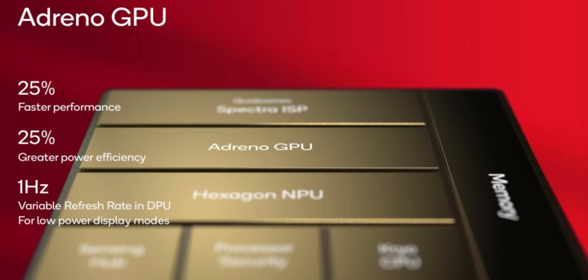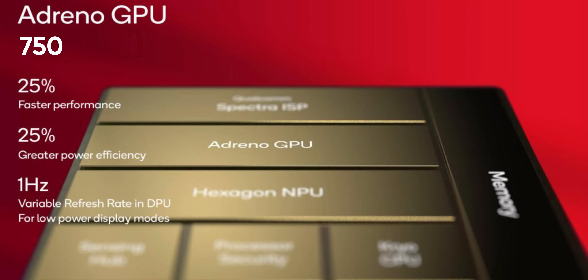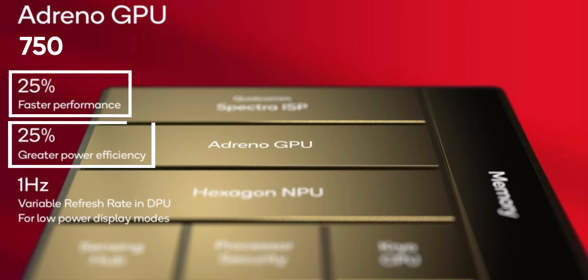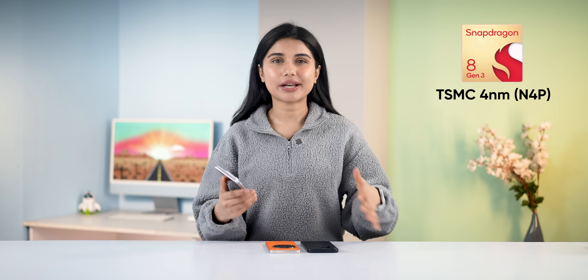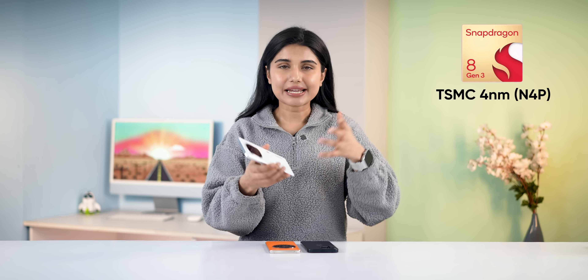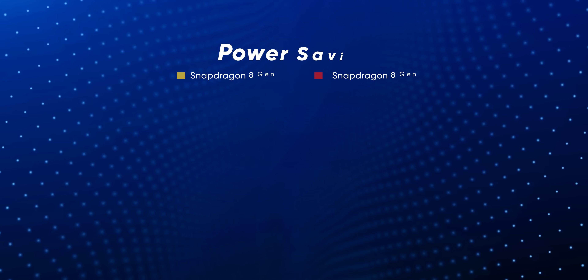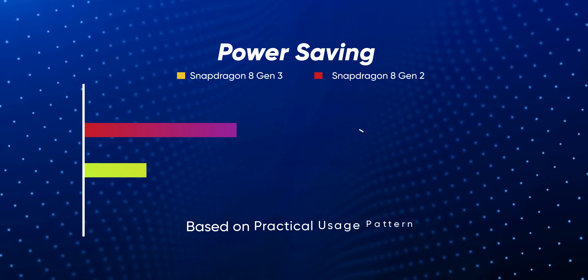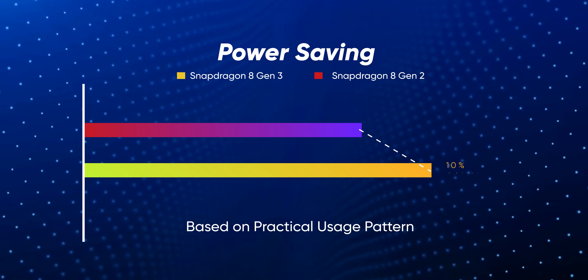The new Adreno 750 GPU also promises an impressive 25% faster performance, 25% better efficiency, and 40% better hardware-based ray tracing. By switching to TSMC's 2nd Gen 4NM process, besides other architectural changes, the Snapdragon 8 Gen 3's overall power savings have apparently improved up to 10% as well.